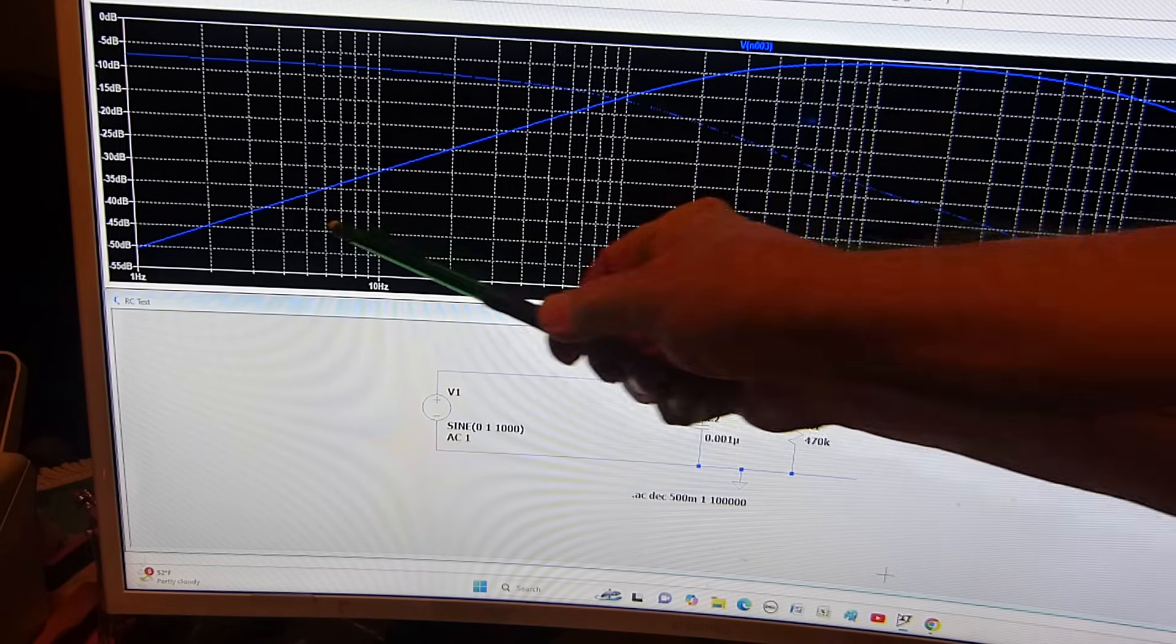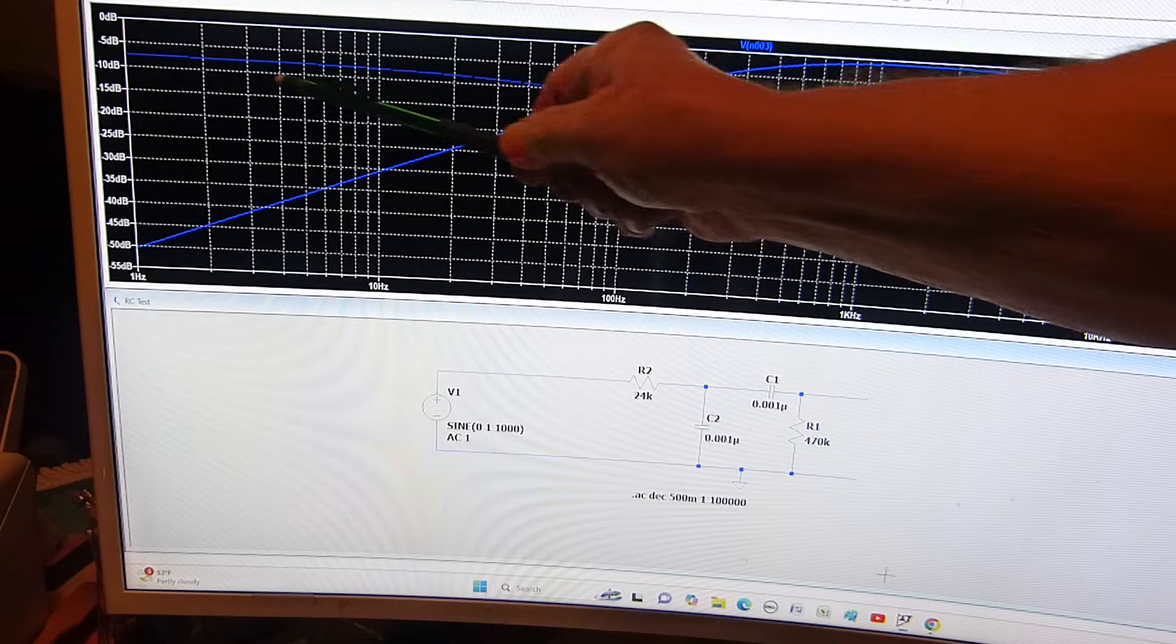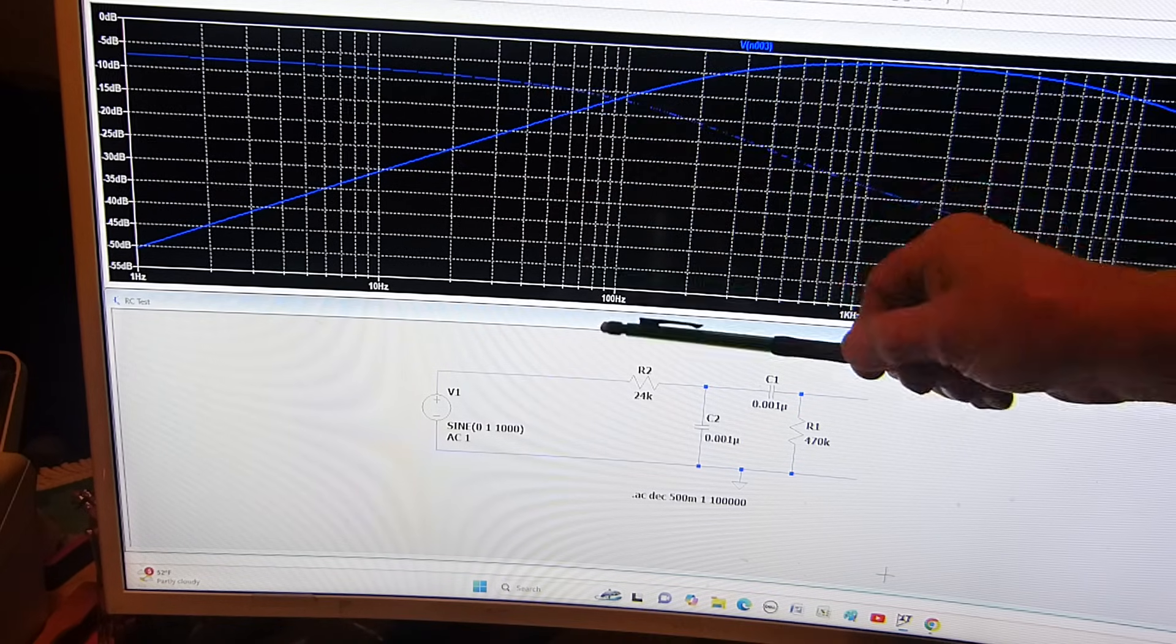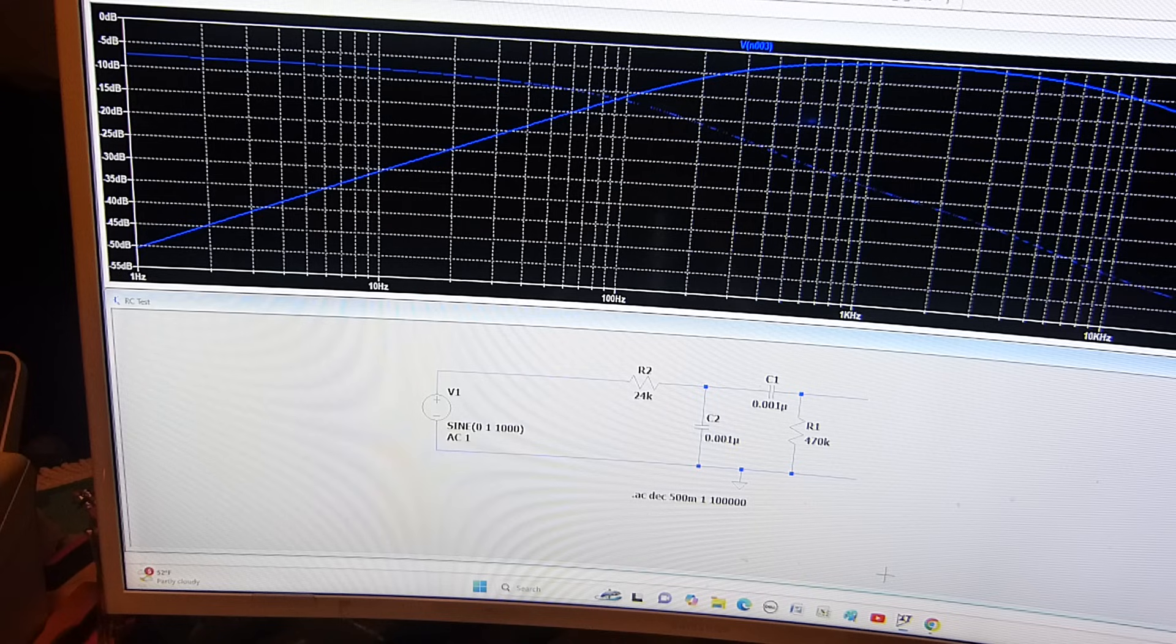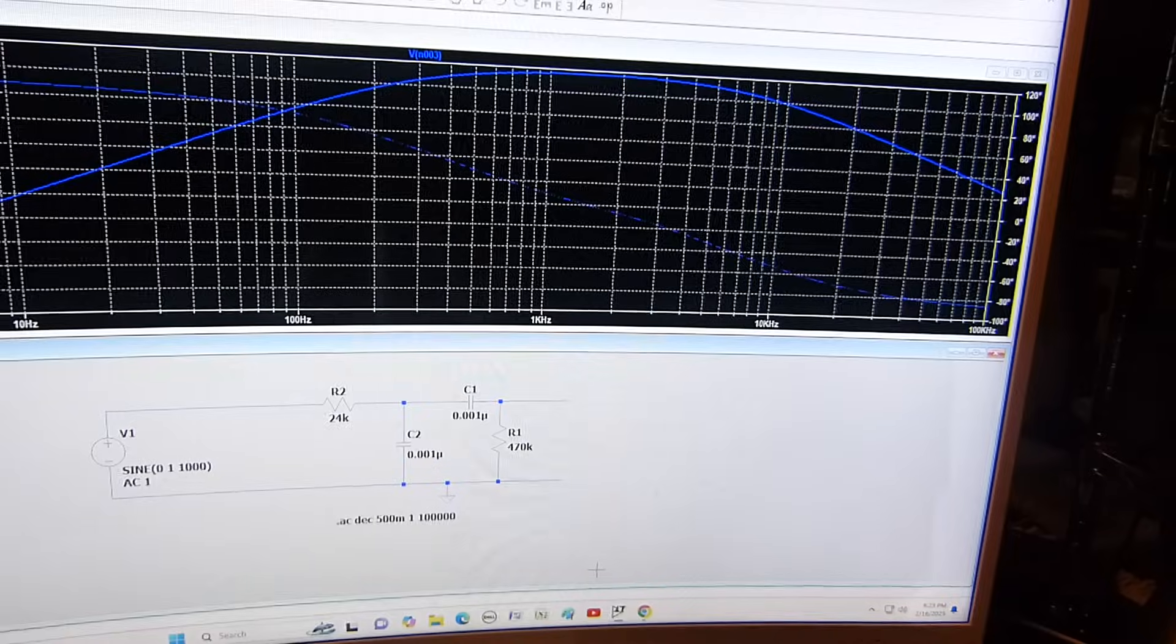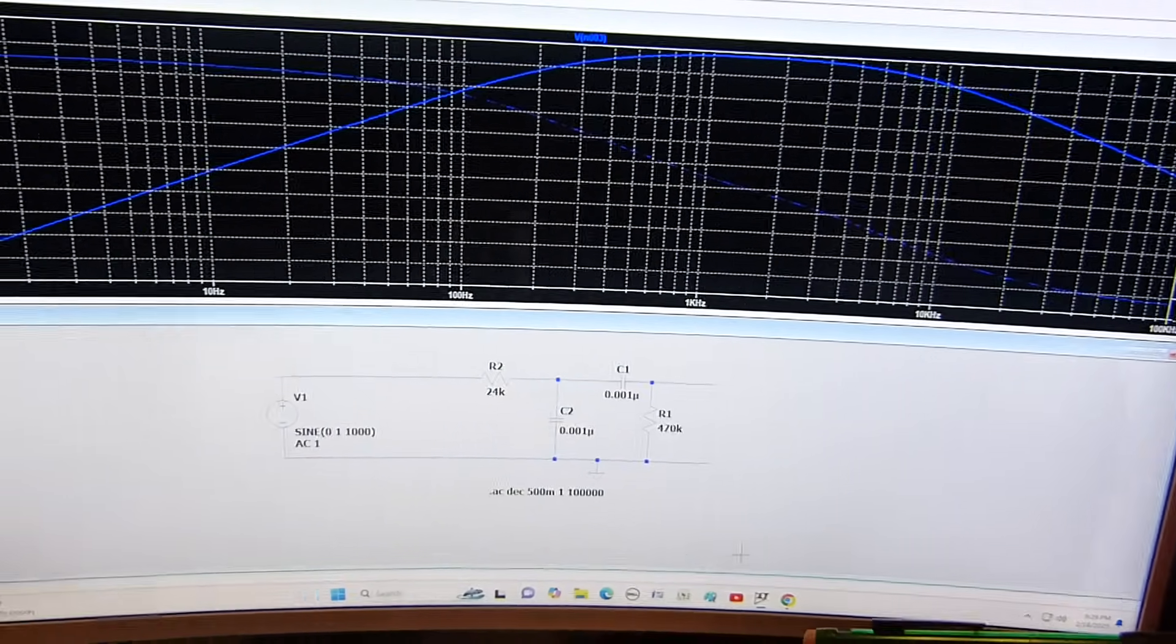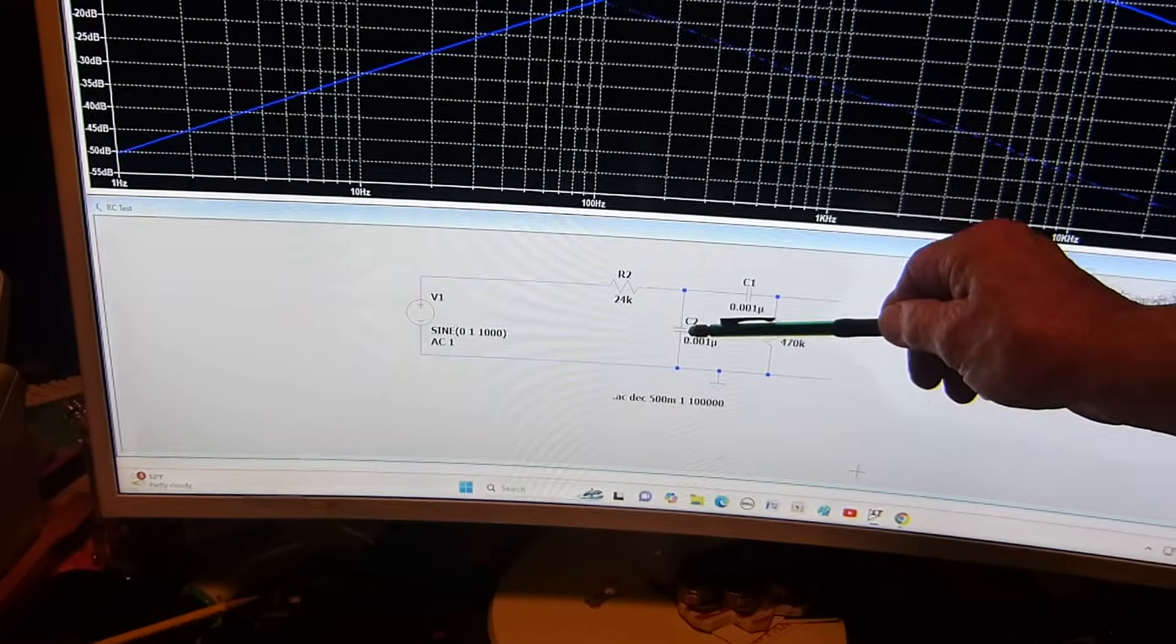And then I'm simulating it. Look at the curve right here - down at 1 hertz it's down 50 dB. Its 3dB point is going to be somewhere around here. But it also contours the high end too.